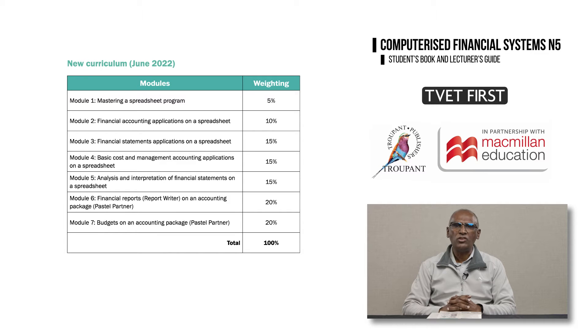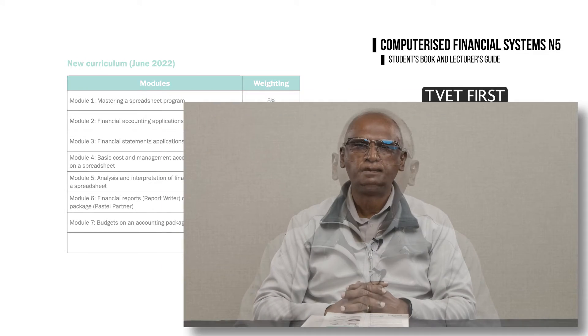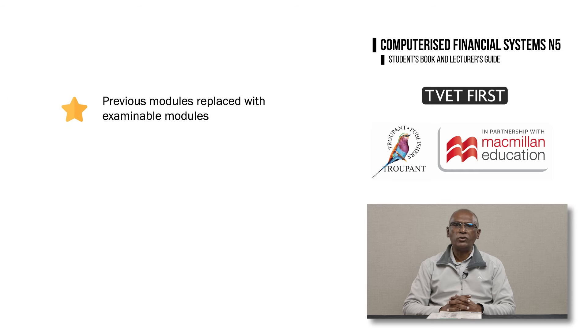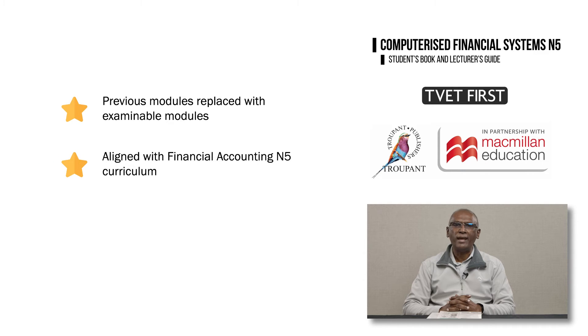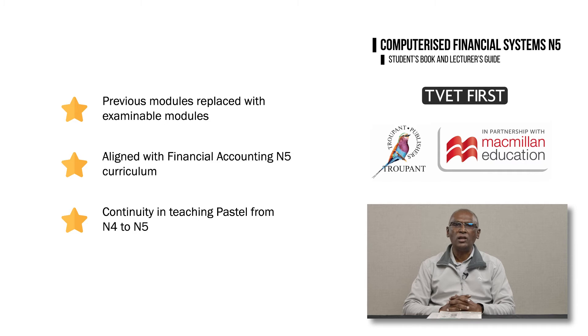The module weightings have been changed in the new curriculum, so do go through the new weightings carefully before you plan your teaching. The design of the 2022 curriculum helps you in three important ways. Firstly, the old modules 2 and 3 covered outcomes that could not be examined; these have been replaced by outcomes that are examined and more relevant. Secondly, the curriculum includes a module on Analysis and Interpretation of Financial Statements, aligning it with the Financial Accounting N5 syllabus. And thirdly, the module on Pastel Accounting in N5 ensures continuity with Pastel from the N4 course. That concludes the main changes and improvements to the CFS N5 curriculum.